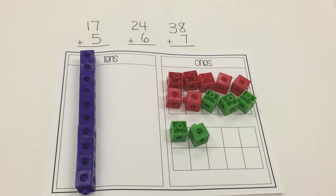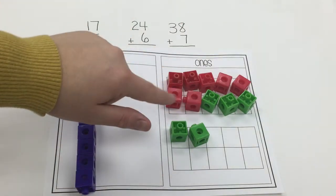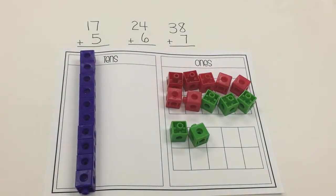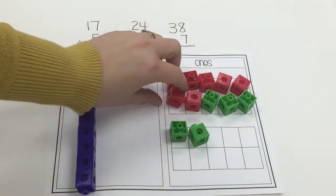Now the question is always, I tell my students this, ask yourself the question, do I need to regroup? Do I have enough to make a 10? It is obvious here, and this is why I like this place value mat. You can see it has a 10 frame. When you fill up a 10 frame, you are ready to regroup.